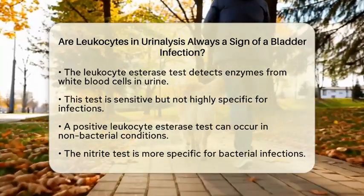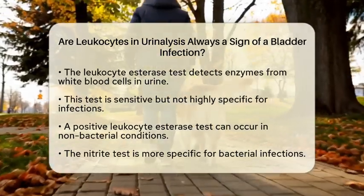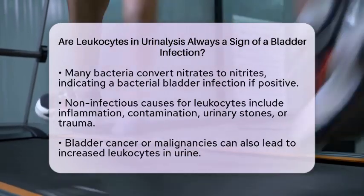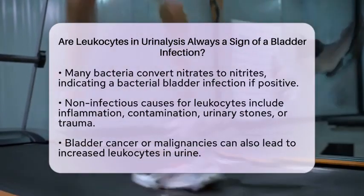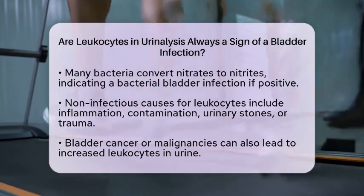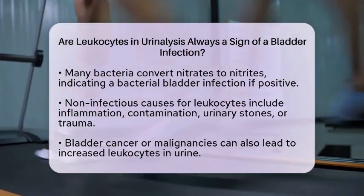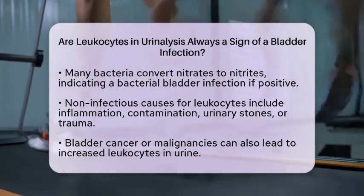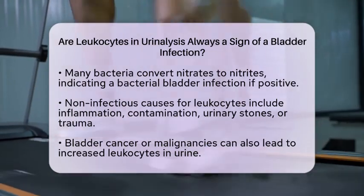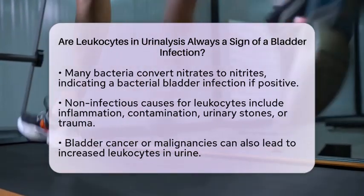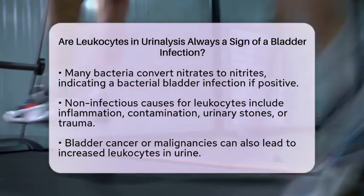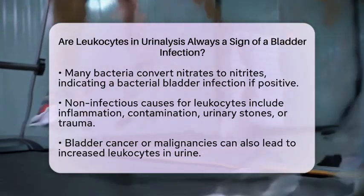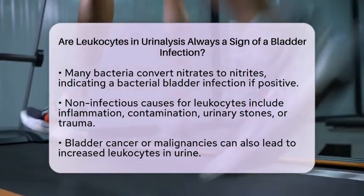There are also other reasons for leukocytes to be present in urine: non-infectious inflammation, contamination from vaginal or skin flora, urinary tract stones, or trauma can all lead to increased leukocytes. In some cases, bladder cancer or other malignancies can cause inflammation, resulting in leukocytes in the urine as well. It is important to note that leukocytes alone do not diagnose bladder cancer. If leukocytes are present without any symptoms of infection, further evaluation may be necessary to rule out malignancy or other bladder conditions.